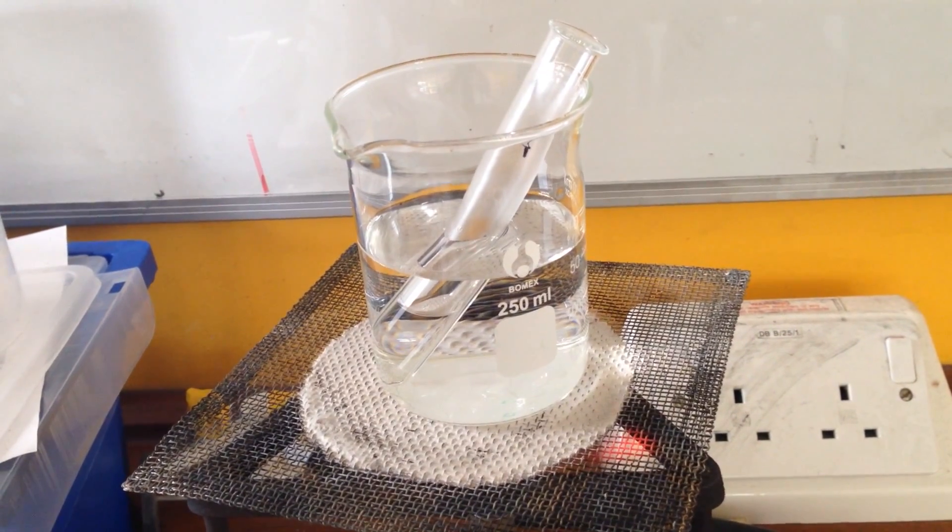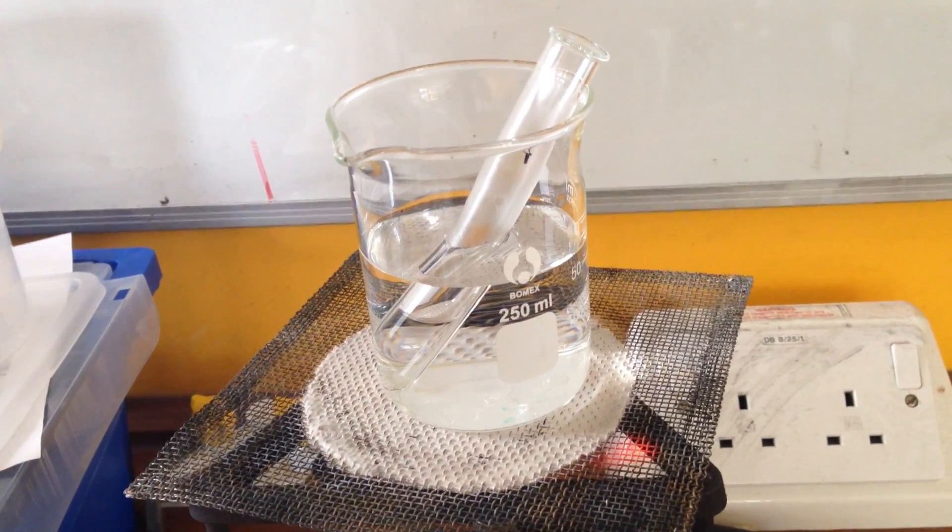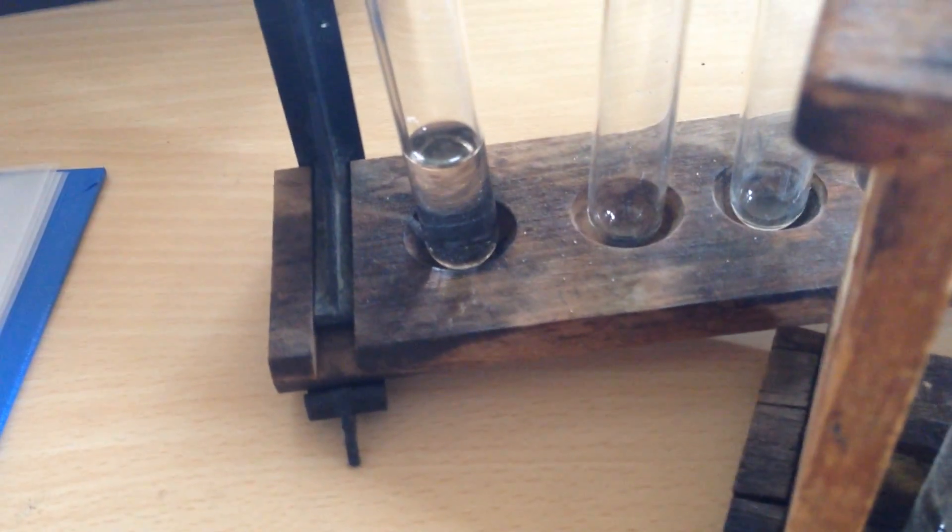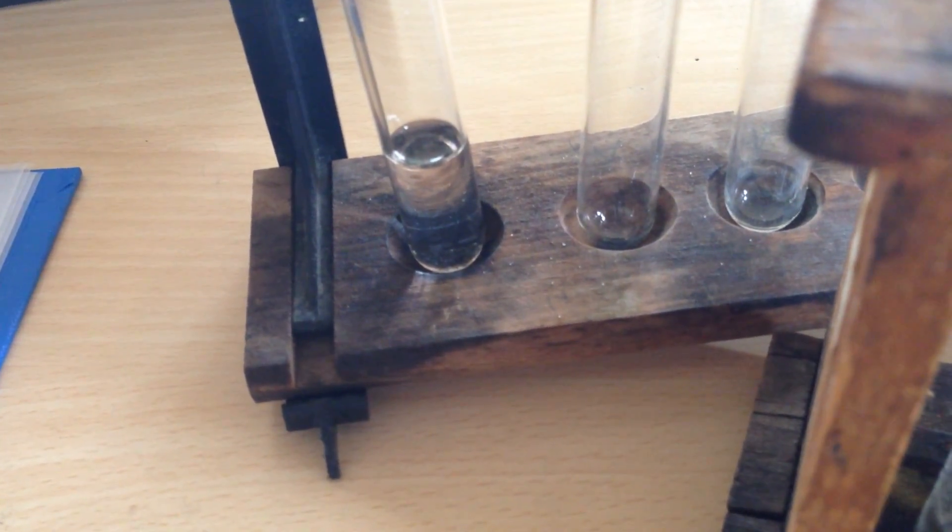We're just going to warm the solution gently for a couple of minutes. So now I have the ethanol that I've produced. I'm just going to slowly add 10 drops.